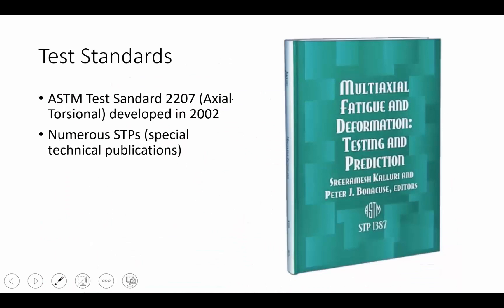In terms of test standards for multi-axial loading, ASTM has produced some test standards for axial and torsional biaxial loading, originally developed in 2002, and it's continuing to be evolved every year. In addition, numerous special technical publications by ASTM, ASM, and other organizations have come out to deal with multi-axial fatigue loading, because it is very complicated and it's a very expensive and easy-to-mess-up experiment.